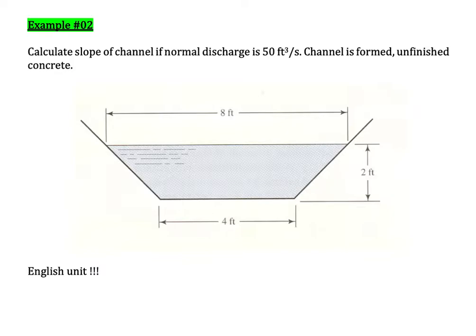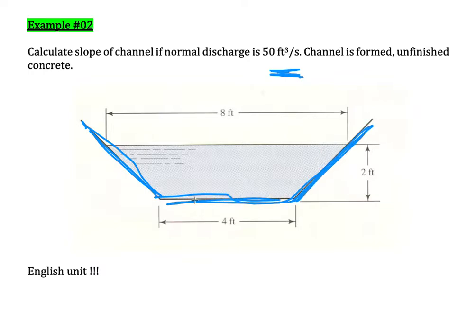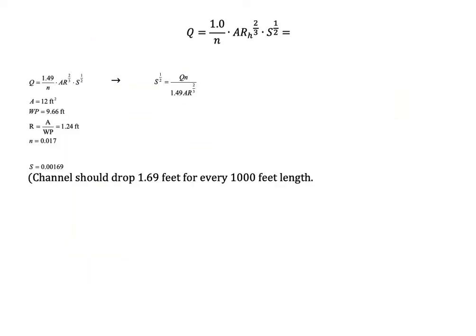Example two uses British units — feet and cubic feet per second. The cross-sectional area is not circular; it is a trapezoid. You need to know how to calculate the properties of a trapezoid. The steps are the same as the previous question.